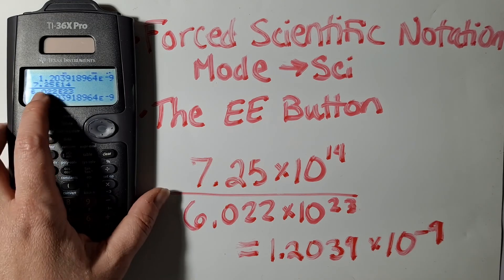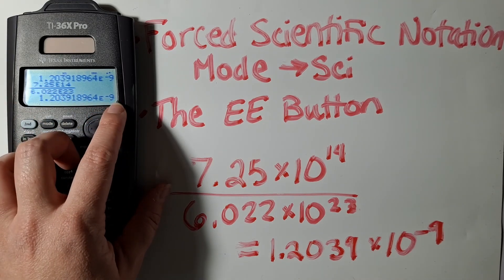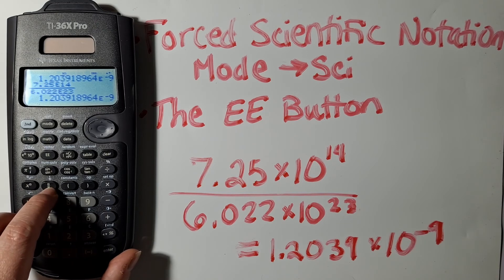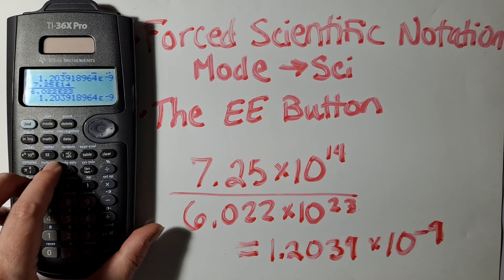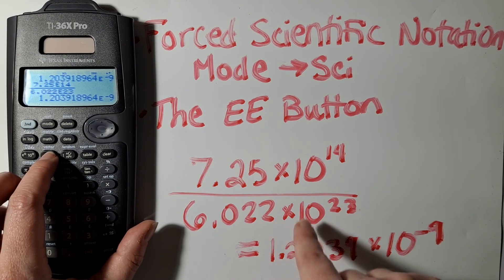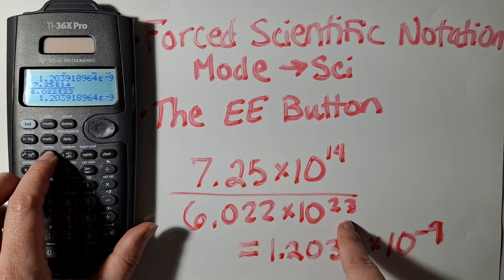Now I can hit enter, and you can see I get that same numerical value. So I recommend typing it as a two-line fraction so that you can see it, and using the E button to tell your calculator what is connected to what.